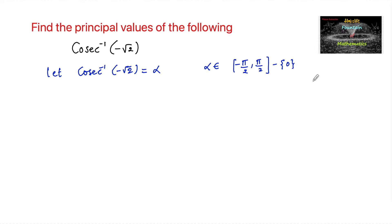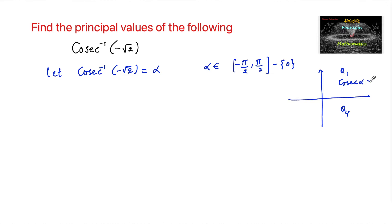This is the principal range of the cosecant inverse function — we shall consider the first quadrant and the fourth quadrant. In the first quadrant, cosecant alpha is positive, and in the fourth quadrant, cosecant alpha is negative, with alpha not equal to 0.